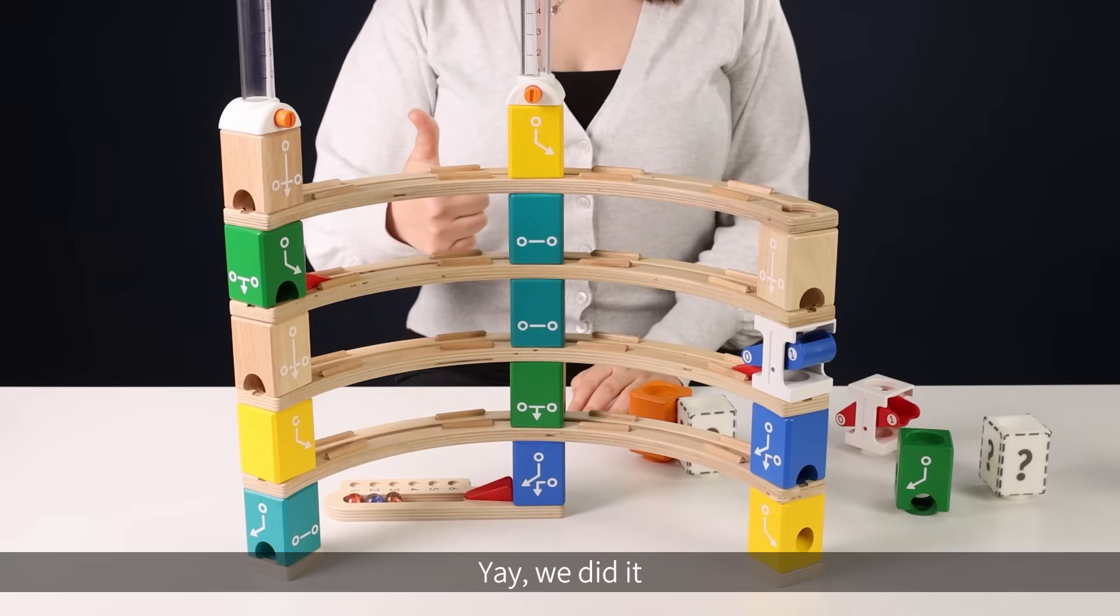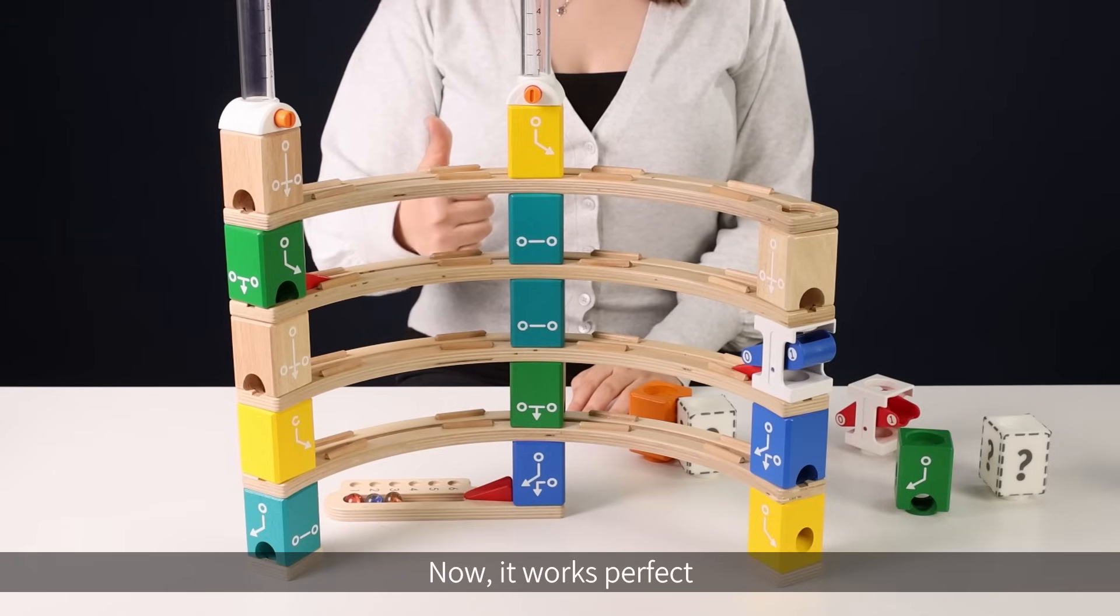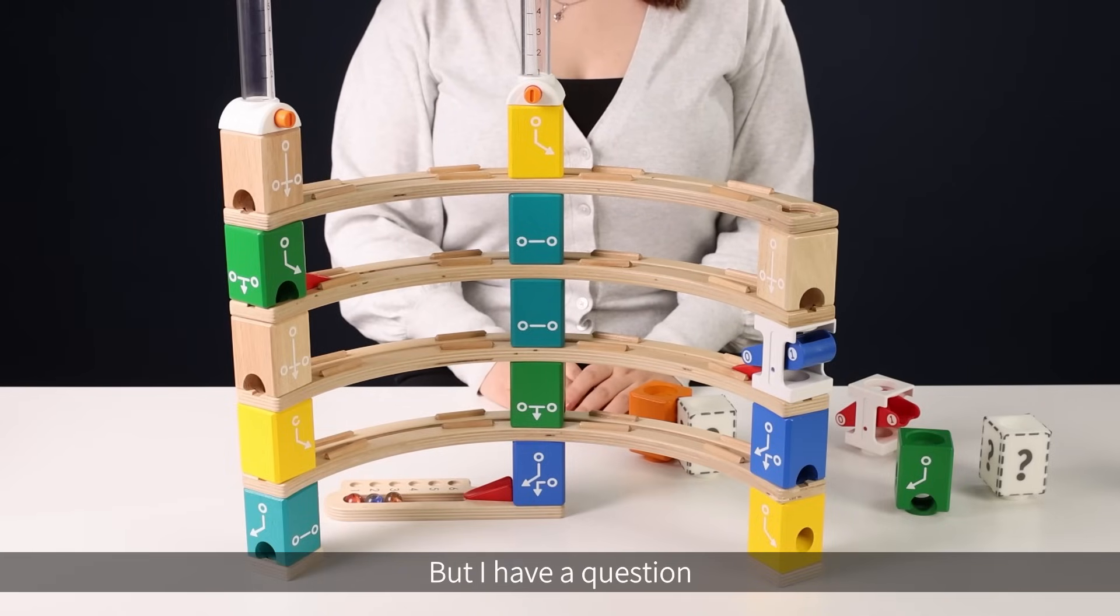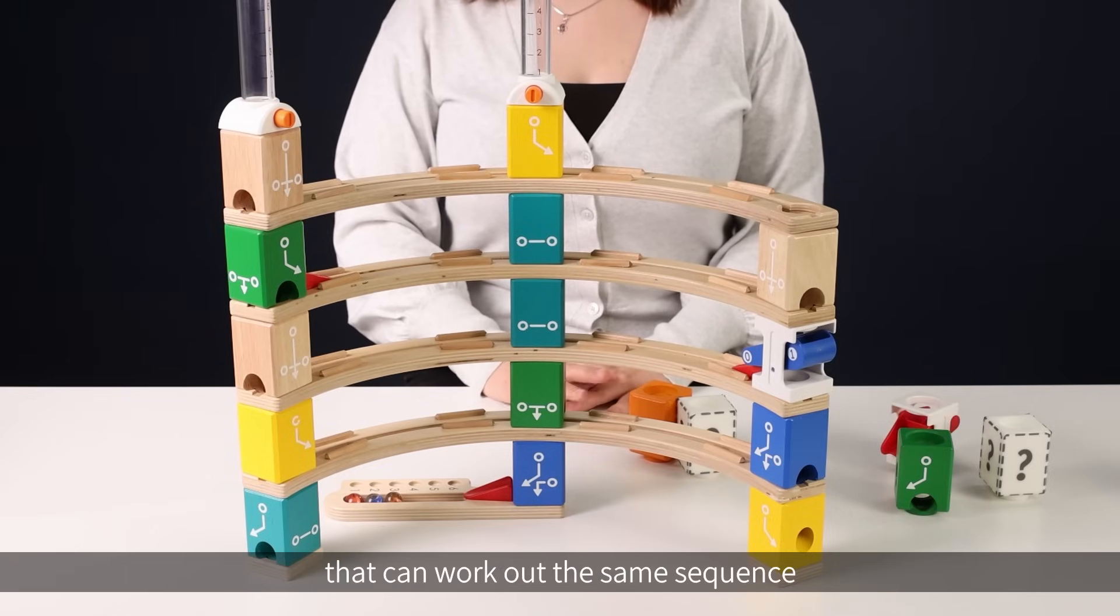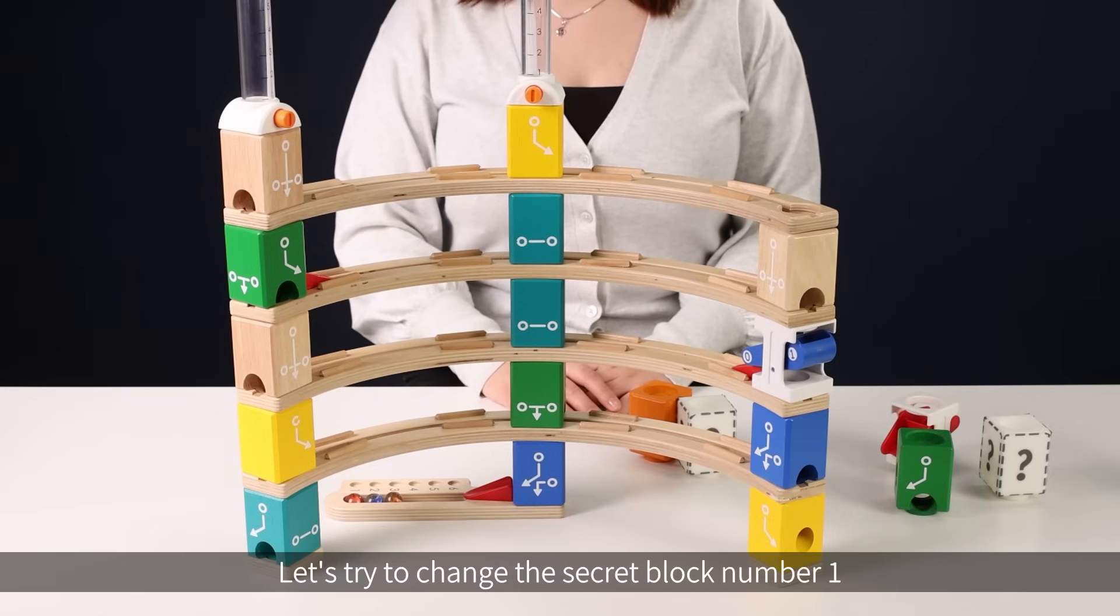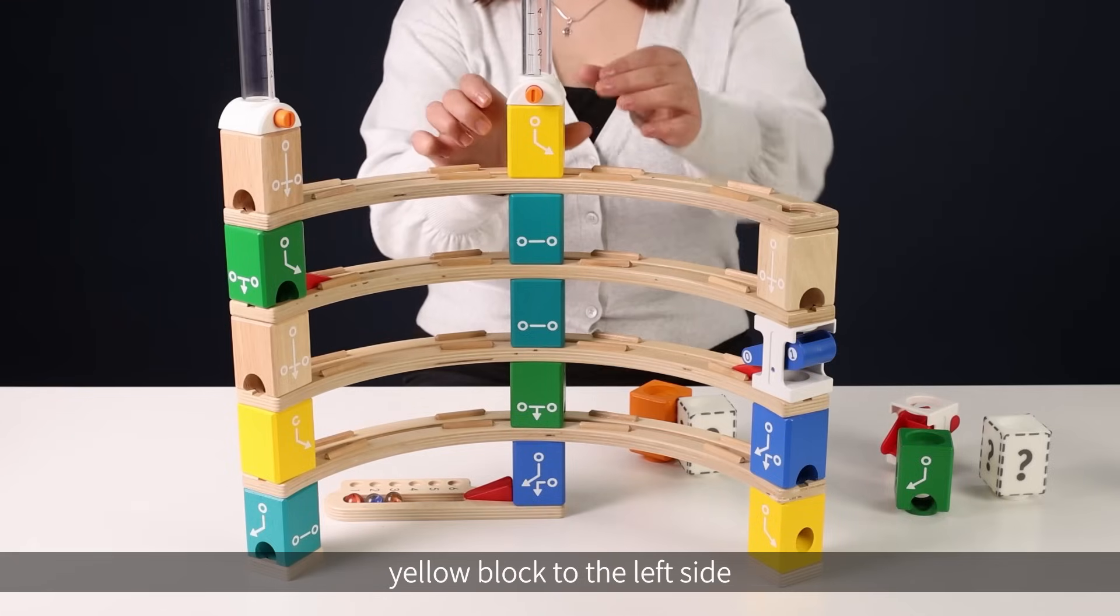Yay! We did it! Now it works perfect. But I have a question. Do you think there is other solution that can work out the same sequence? Let's try to change the secret block number one yellow block to the left side.